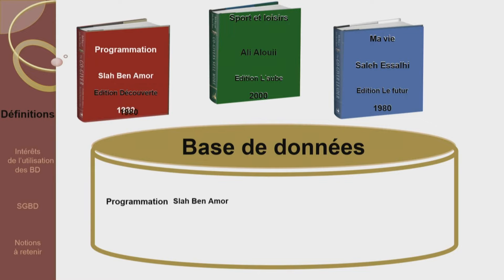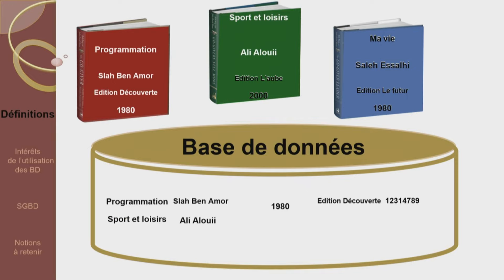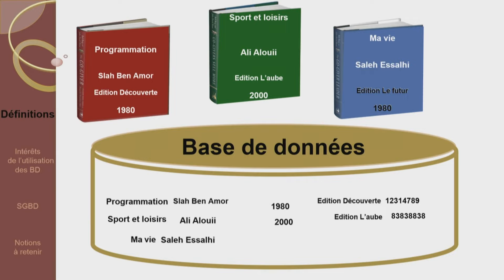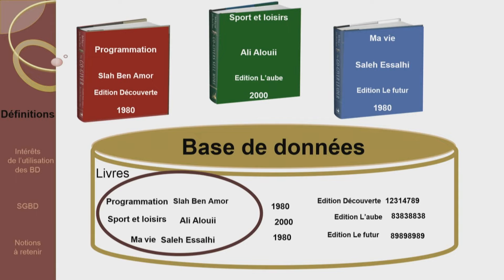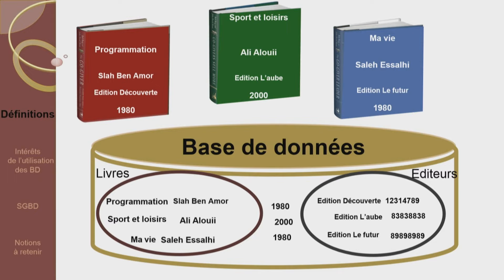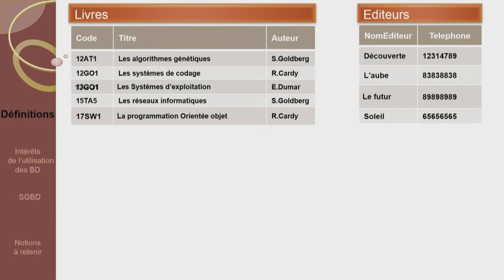Nous allons saisir les données présentes pour chaque livre : le titre, l'auteur, l'année d'édition, le nom de l'éditeur, son numéro de téléphone — pour tous les livres. Les données propres aux livres vont être mises dans une structure indépendante appelée 'livre'. Les données propres aux éditeurs vont être mises dans une structure appelée 'éditeur'. Ce qui donne une structure livre et une structure éditeur contenant respectivement les données propres aux livres et aux éditeurs.